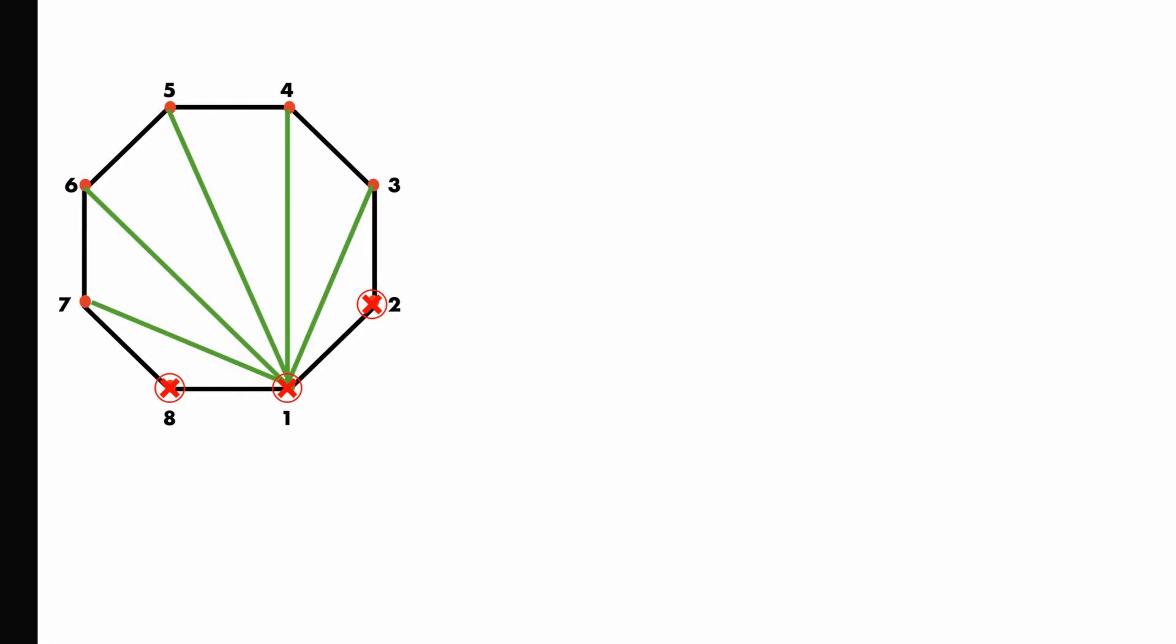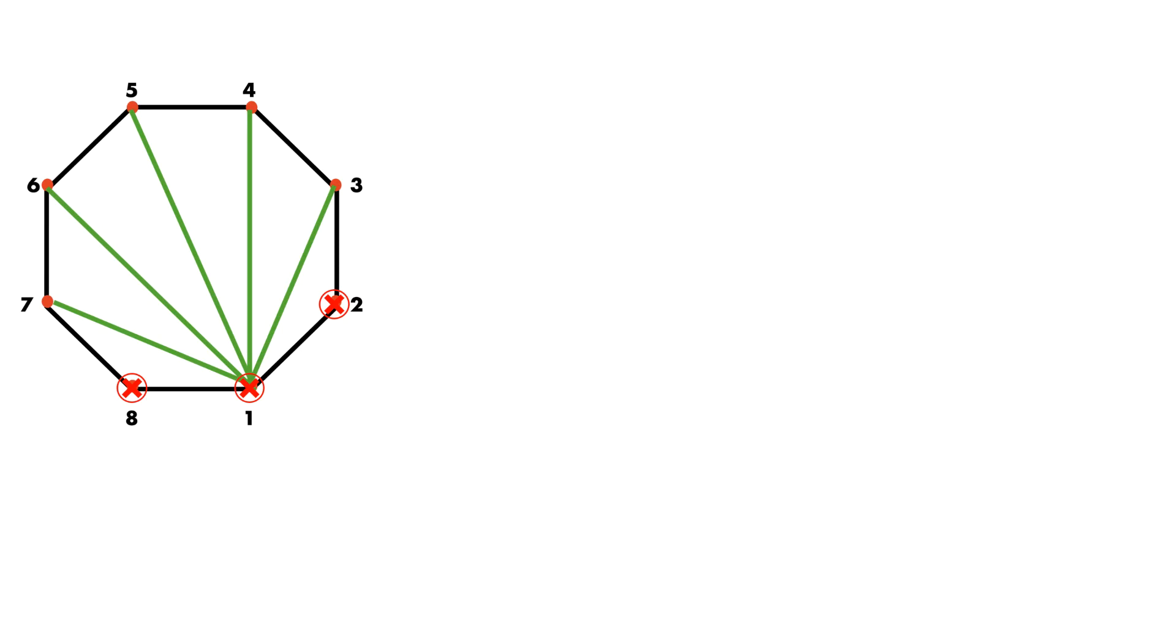We can generalize the solution for any polygon. If n is the number of vertices, we can derive the formula. To draw a diagonal, you have to select 2 vertices out of n. But you cannot draw diagonal by joining the adjacent vertex. Hence, number of diagonals can be calculated using the technique of combination. Number of diagonals equals nC2 minus n, where n is the number of sides of the polygon.